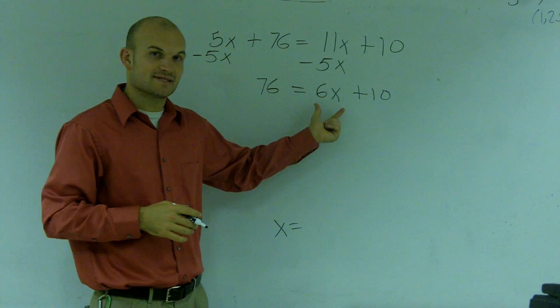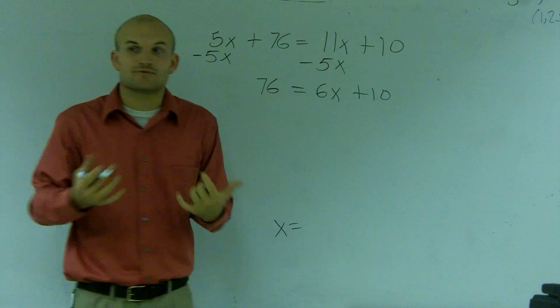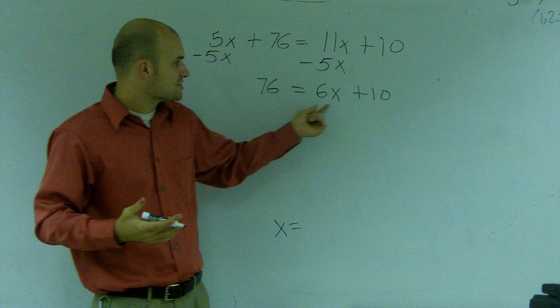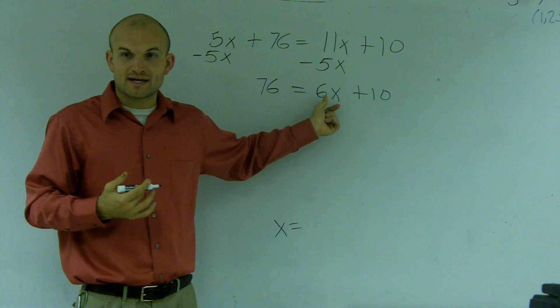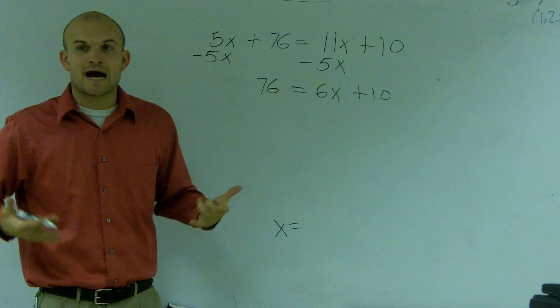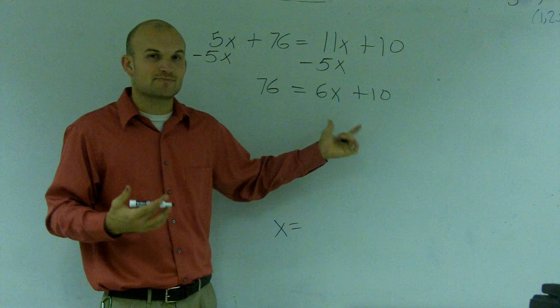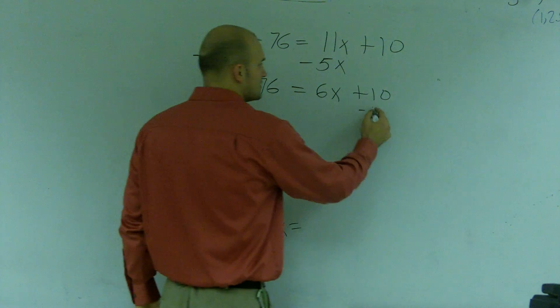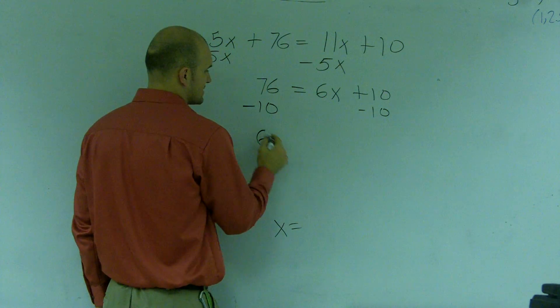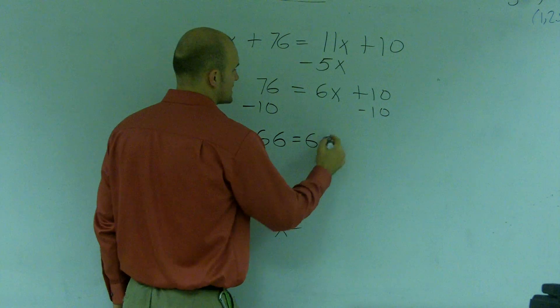Now, I have my x on the right side. But with that, now I need to get rid of everything else that's on that side. So I have it being added by 10 and being multiplied by 6. So to undo those operations to my x, I need to get this x by itself. So I'm going to undo addition by subtracting. So I get 66 equals 6x.